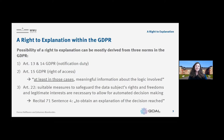The second or third norm where you can look for the right to explanation is Article 22, which is about automated individual decision-making. It says that decisions based solely on automated processing require suitable measures to safeguard the data subject's rights, freedoms, and legitimate interests. This norm is supplemented by Recital 71, sentence 4, which says to 'obtain an explanation of the decision reached.' This recital is the only part in the GDPR where you can find the word 'explanation,' and it helps us understand what is meant by 'suitable measures' within Article 22.